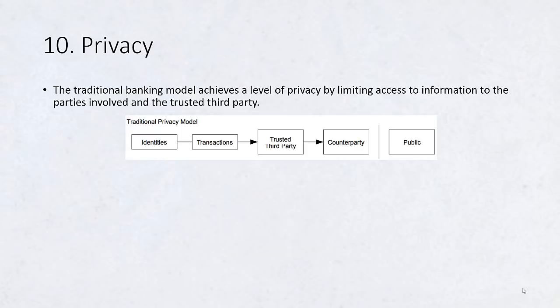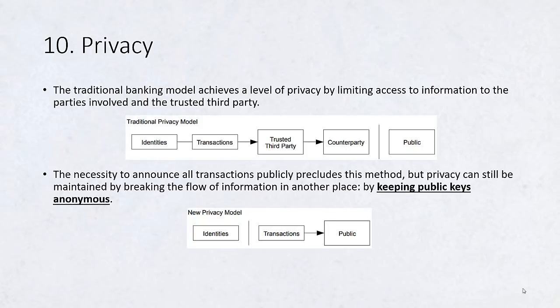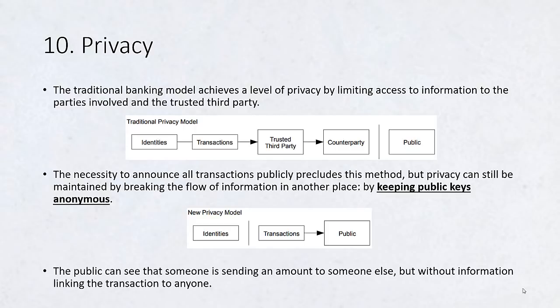Privacy. The traditional banking model achieves a level of privacy by limiting access to information to the parties involved and the trusted third party. The necessity to announce all transactions publicly precludes this method. But privacy can still be maintained by breaking the flow of information in another place, by keeping public keys anonymous. The public can see that someone is sending an amount to someone else, but without information linking the transaction to anyone.